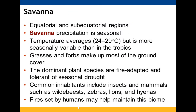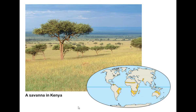Savannas are found in equatorial and sub-equatorial regions with seasonal precipitation. Temperatures range between 24 and 29 degrees Celsius but are more variable than in tropical forests. Grasses and forbs make up the majority of ground cover; dominant plant species are fire-adapted and drought-tolerant. Common species include insects and mammals such as wildebeest, zebras, lions, and hyenas. Human-caused fires actually help maintain this biome by minimizing vertical layering and reducing light competition.